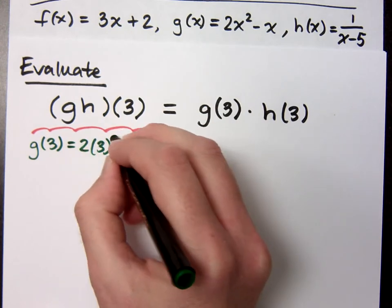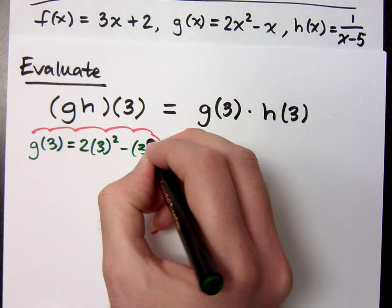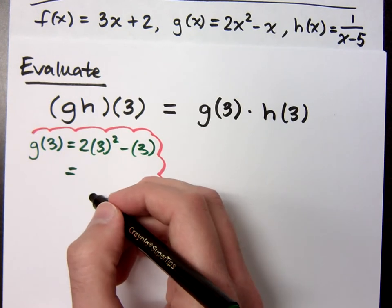So that's 2 times 3 squared minus 3. So what do I get here?